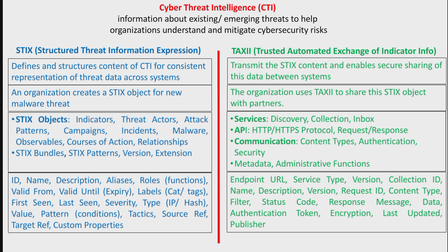In TAXII, you configure parameters such as the endpoint or API URL, service type, versioning information, collection ID, name, description, request ID, content type, filter, status code, response message, authentication tokens, encryption, last updated, and publisher. These two protocols together are used to communicate cyber threat intelligence between different organizations.